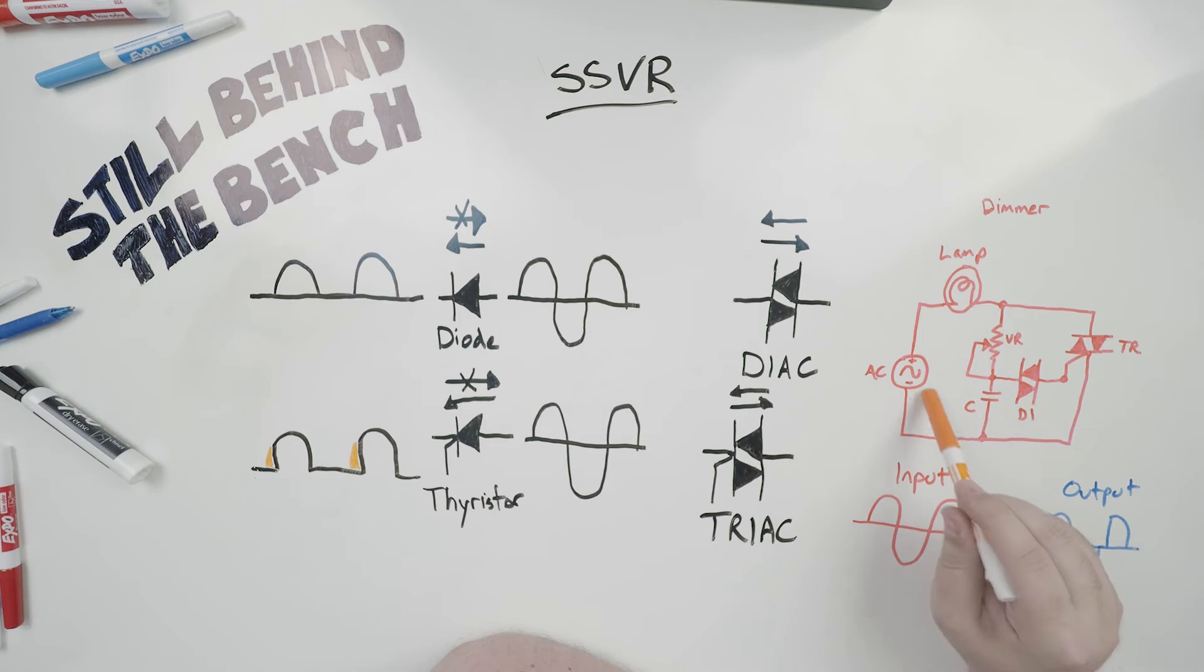We have our source voltage, we have a lamp, this is going to be our load. Here's our TRIAC, we have a DIAC, a variable resistor wired up as a potentiometer, and a capacitor.